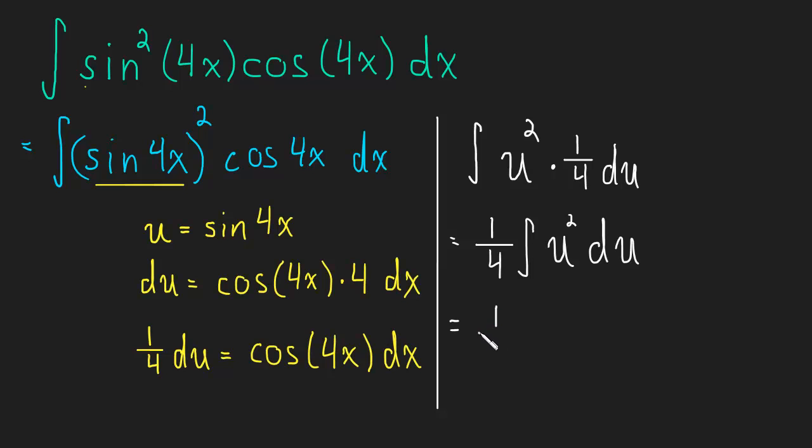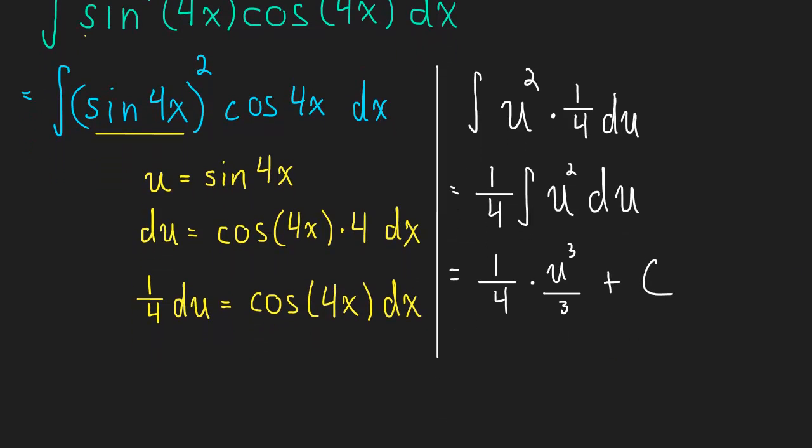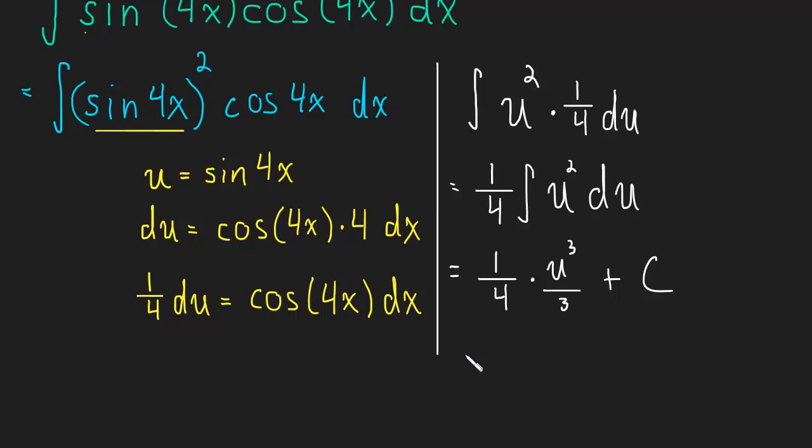The answer is going to be 1 fourth times u cubed over 3 plus c. And then in the last step, we just got to plug back in for u and maybe simplify that fraction. So this is 1 twelfth sine of 4x cubed plus c. And we have our answer.